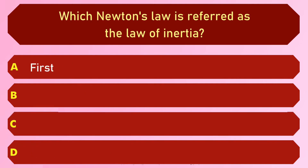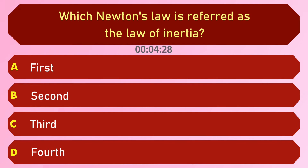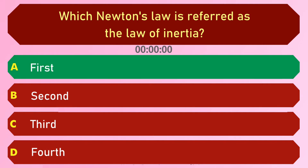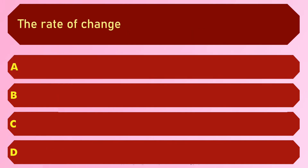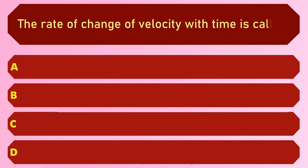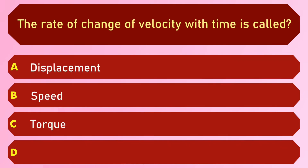Which of Newton's laws is referred to as the law of inertia? Options are: A) First, B) Second, C) Third, and D) Fourth. The answer is option A, First. The rate of change of velocity with time is called — options are: A) Displacement...